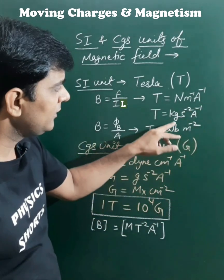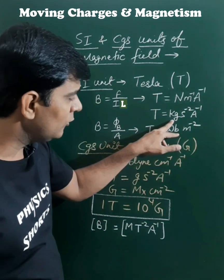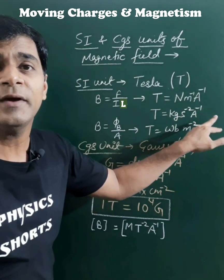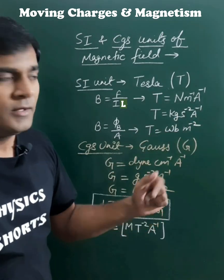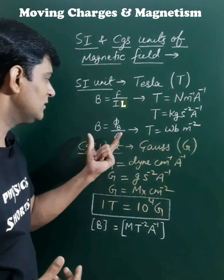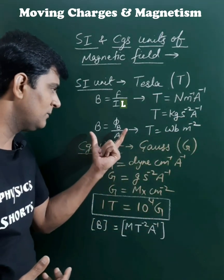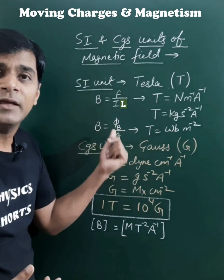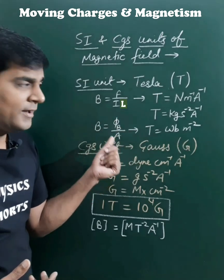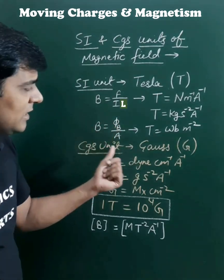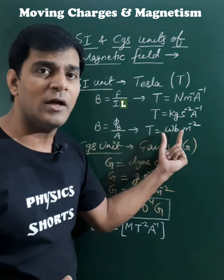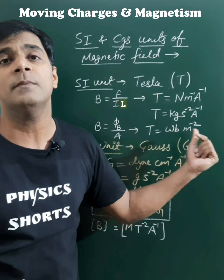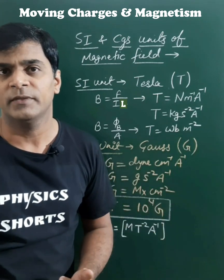If we convert it into kilogram-meter-second units, it will be kilogram per second squared per ampere. In terms of magnetic flux, the magnetic field can also be given by phi B upon A, and since flux has the SI unit of Weber, Tesla is also equivalent to Weber per meter square.